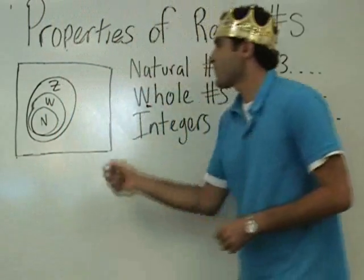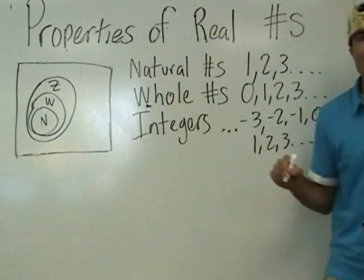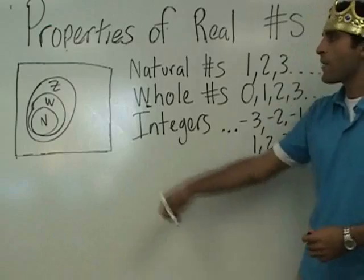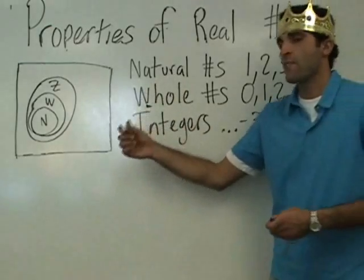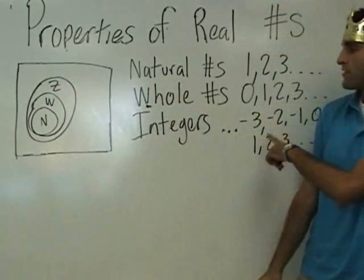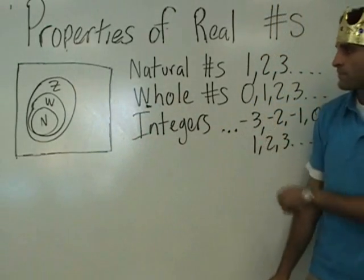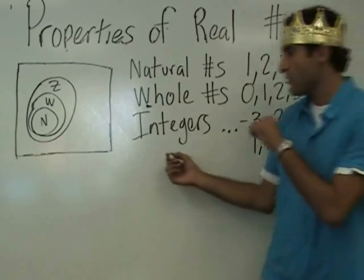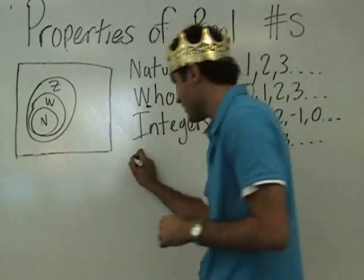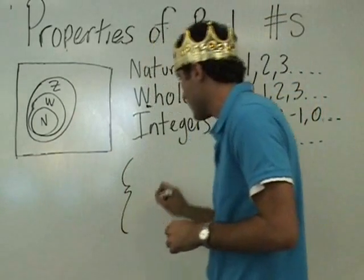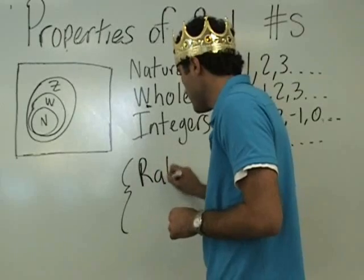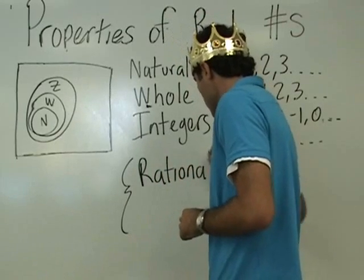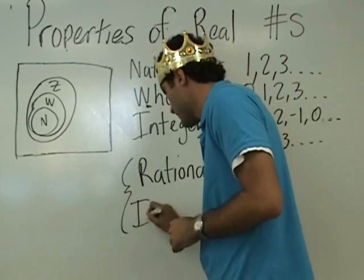The symbol we use for integers is Z — that's usually what they use. Don't worry about the symbol, just know what an integer is. Then we have two more possibilities: rational and irrational.